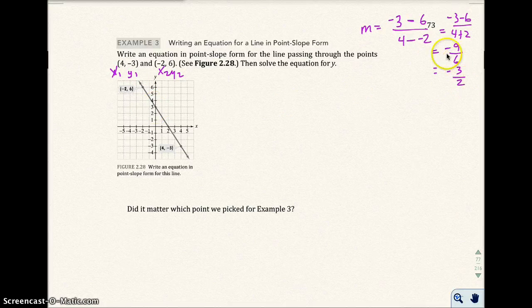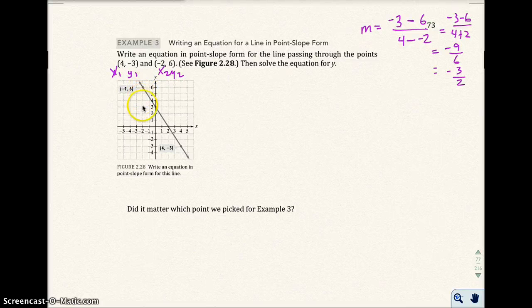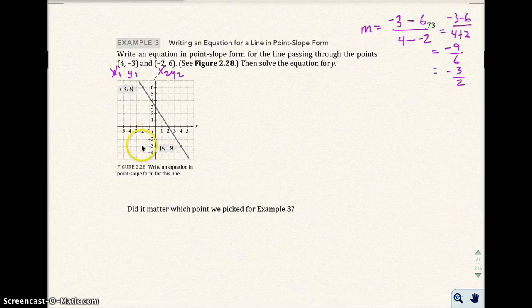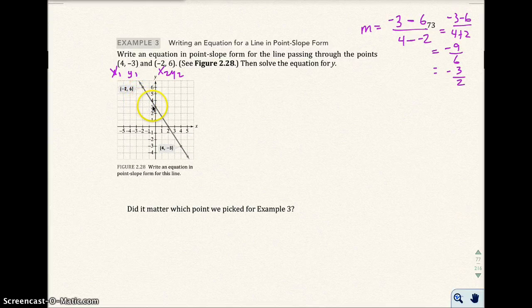This slope actually makes sense. If I hadn't reduced it, I would have gone down 1, 2, 3, 4, 5, 6, 7, 8, 9, and right 1, 2, 3, 4, 5, 6, and I'm back on the line anyway. So either way, down 3, right 2, that would be a point on the line right there.